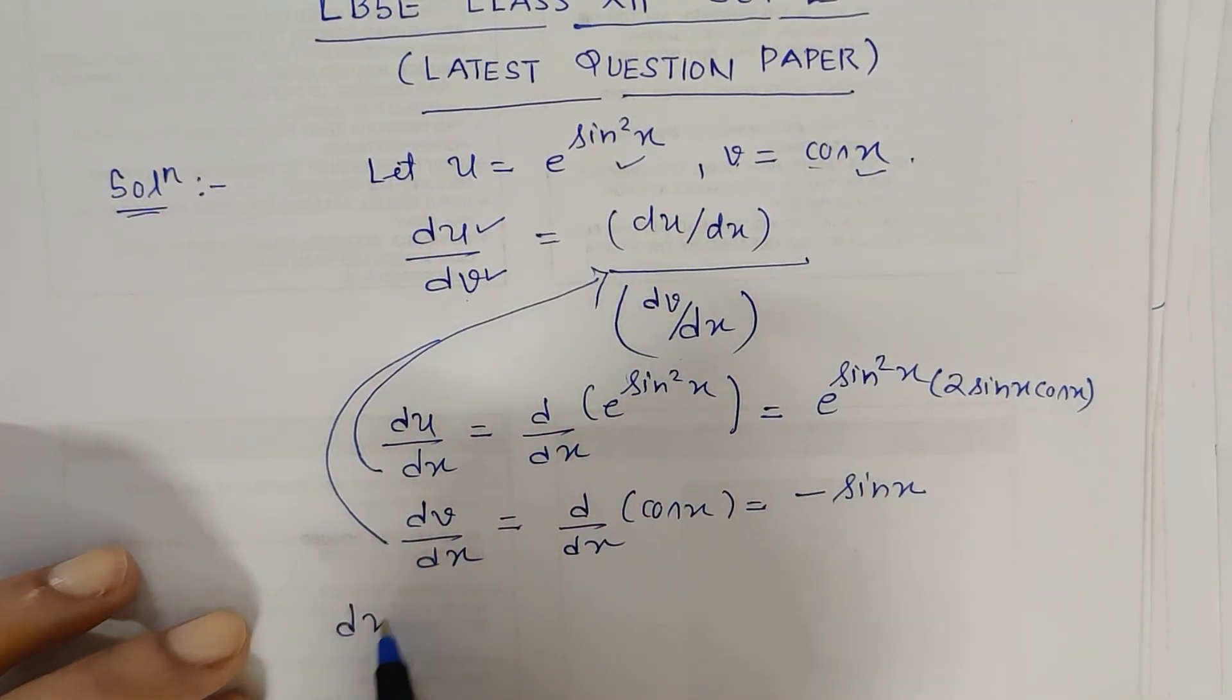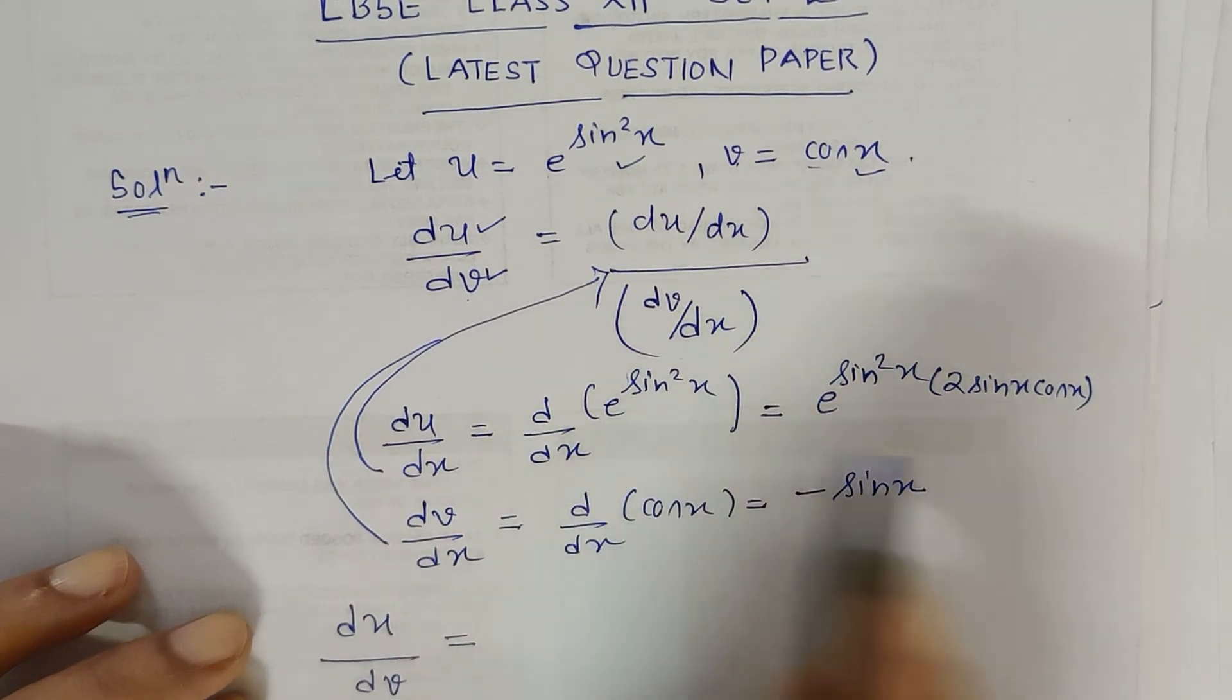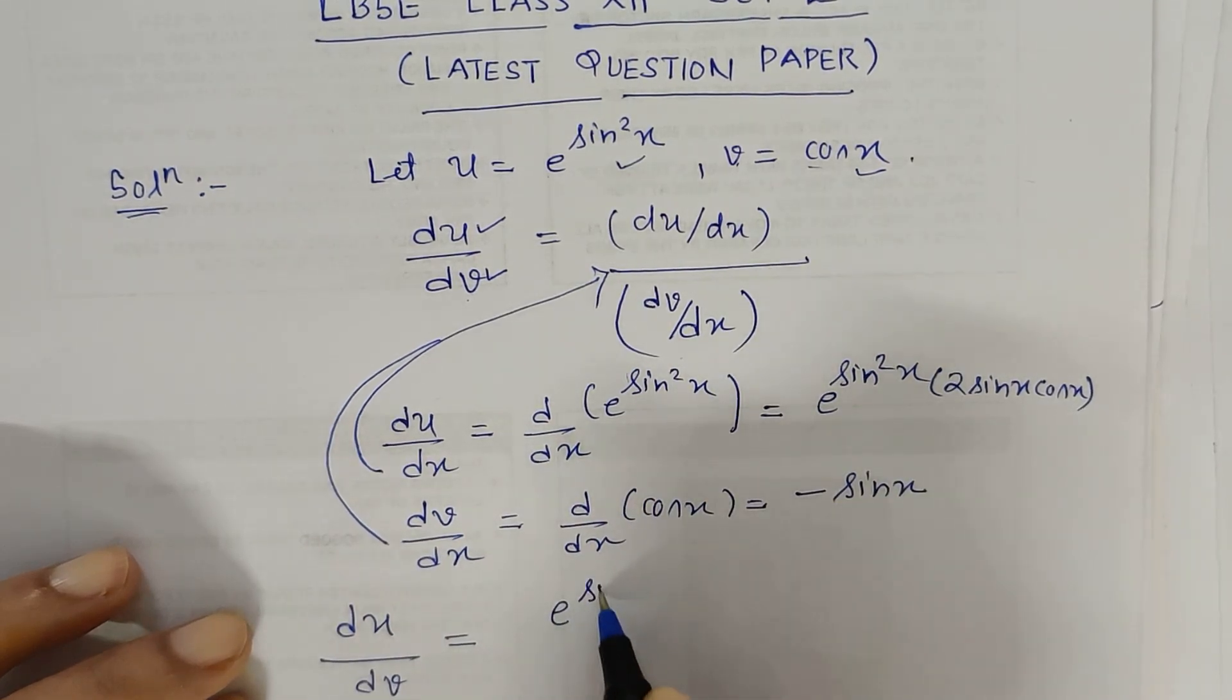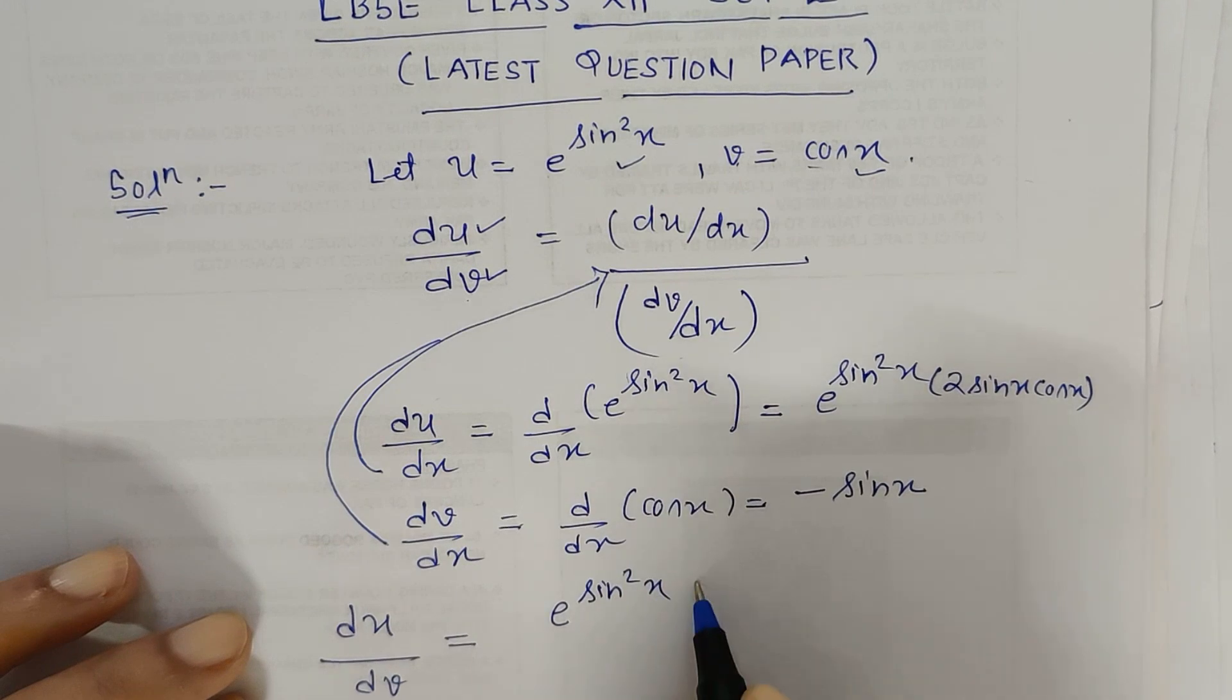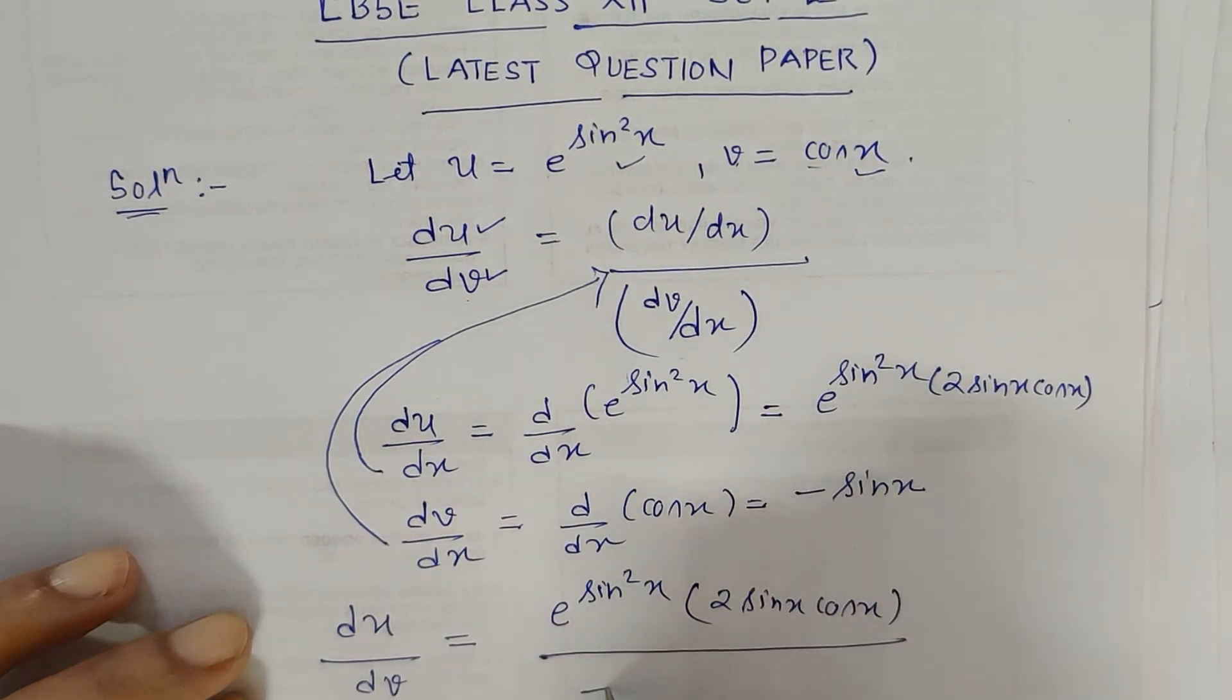So that will give us derivative of e to the power sin squared x with respect to cos x. So it is du by dx which is e to the power sin squared x times 2 sin x cos x upon minus sin x.